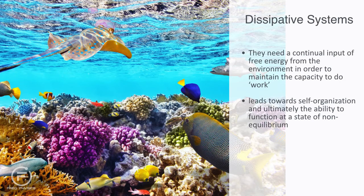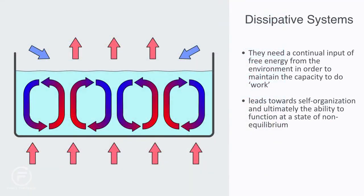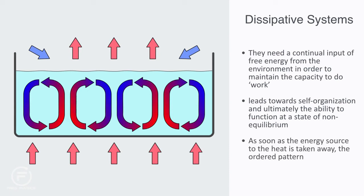A famous example of a self-organizing dissipative structure is the spontaneous organization of water due to convection. If we take a thin layer of water at uniform temperature and start heating it from the bottom, a pattern starts to emerge. As the temperature between the bottom and top of the water reaches a critical level, the water begins to move away from an equilibrium state and an instability within the system develops. At this point, convection commences and the dissipative structure forms. As heat is transformed through the liquid, a patterned hexagonal or honeycomb shape emerges, called Bénard cells, and the capacity to do work is realized. But as soon as the energy source of heat is taken away, the ordered pattern disappears and the water returns to an equilibrium state.